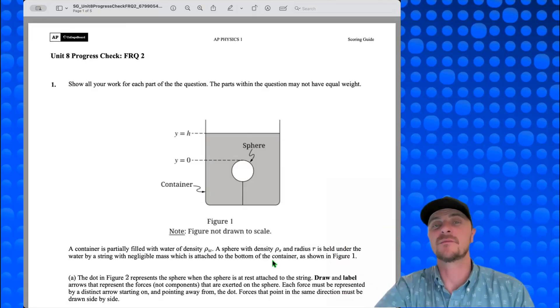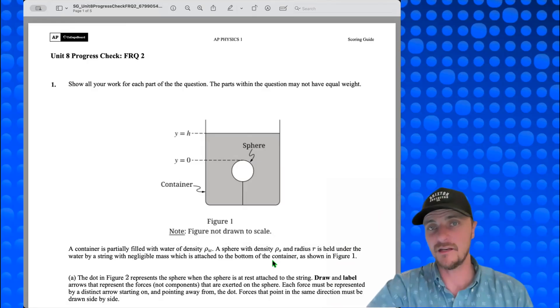AP Physics students, what's up? It's Mr. Heinrich. We're looking at Unit 8 FRQ2 from the progress checks of AP Classroom. Let's get into it.